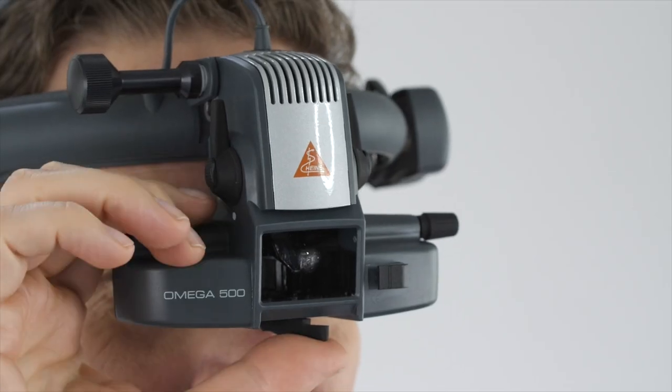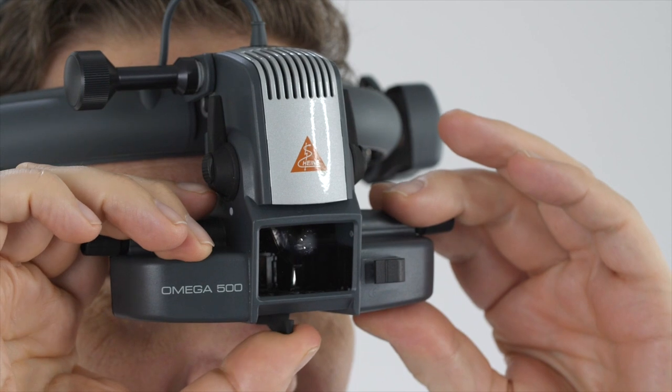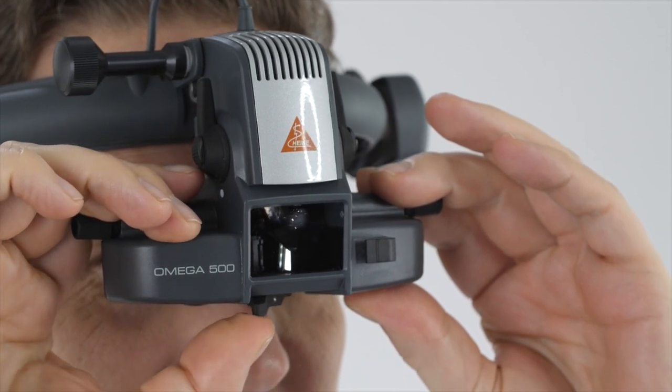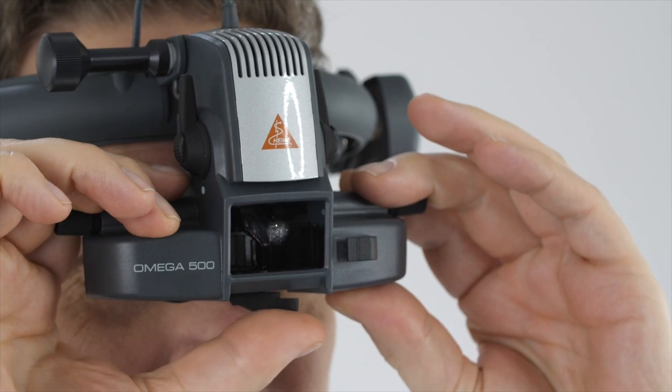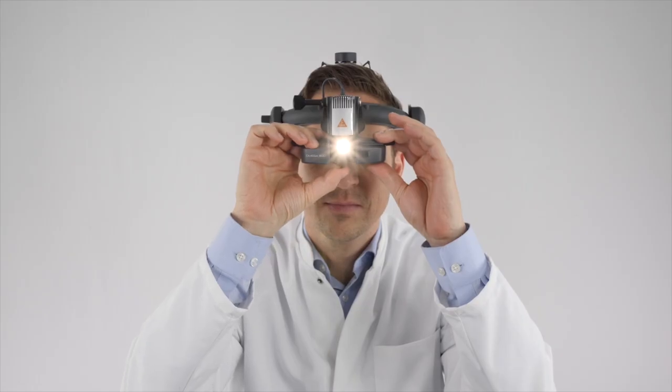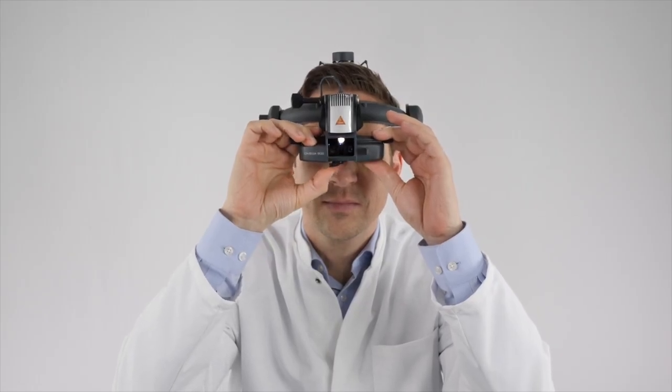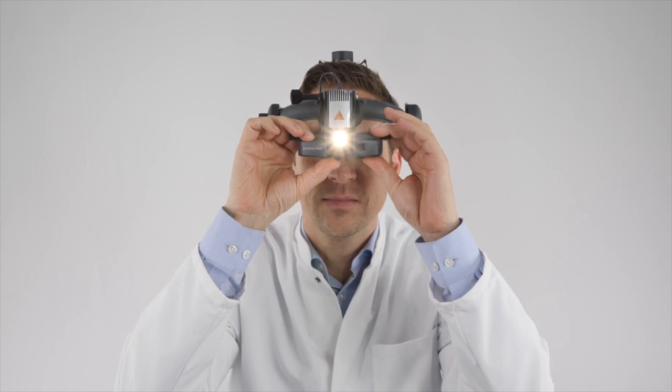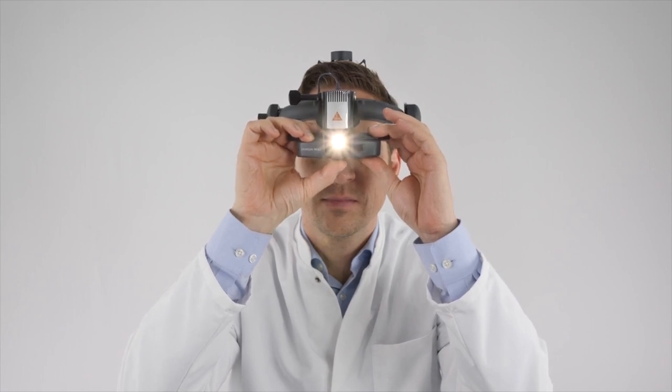And here's the best part. There is still a lever underneath the optics unit. It allows you, and this is unique, to adjust convergence and parallax synchronously. You can now easily adjust the optics of the instrument to enter a smaller pupil size without sacrificing stereopsis.